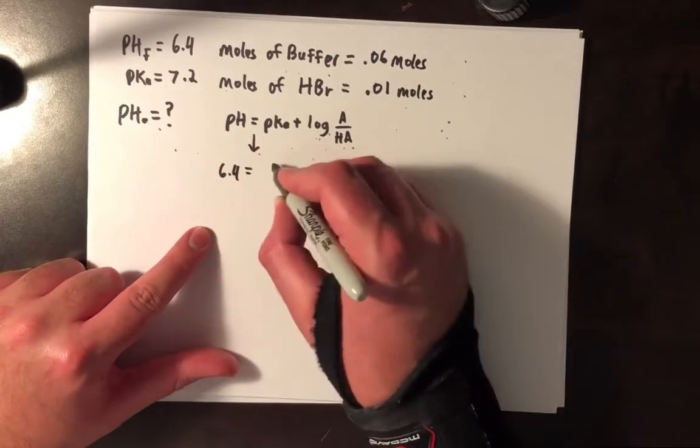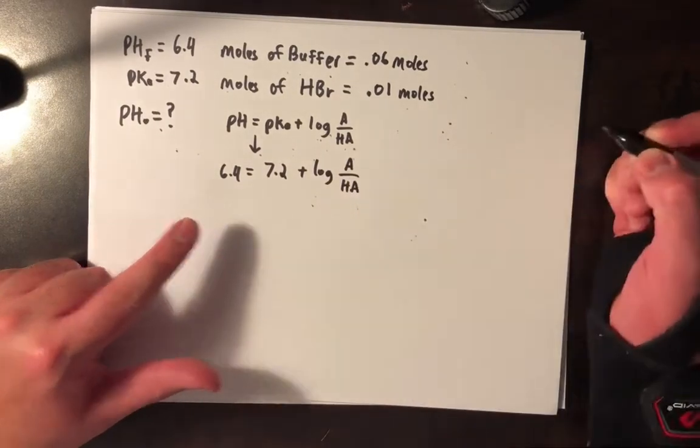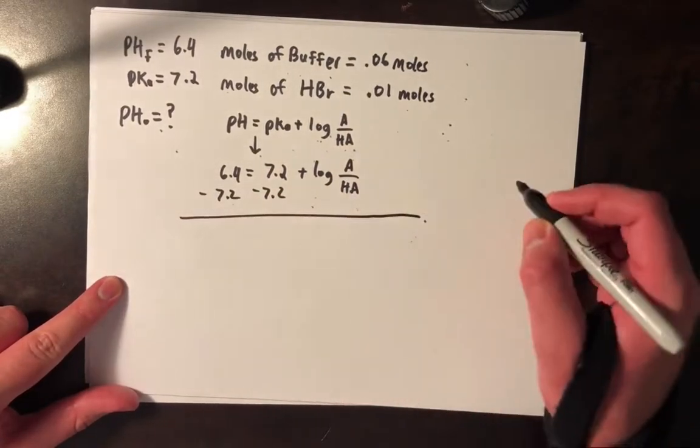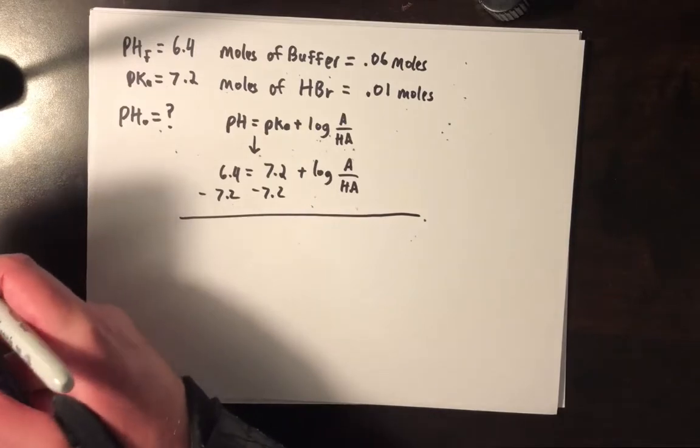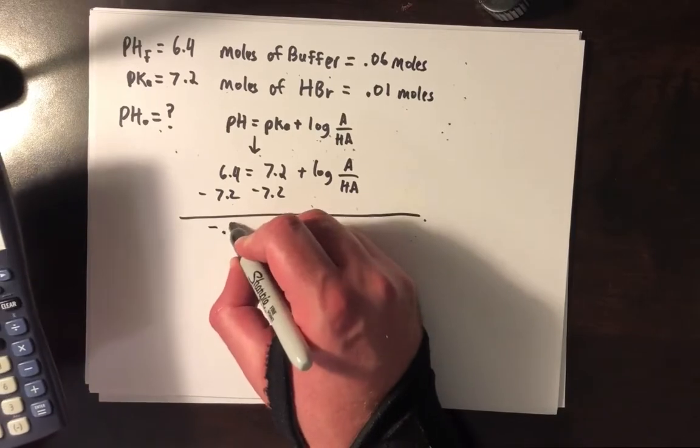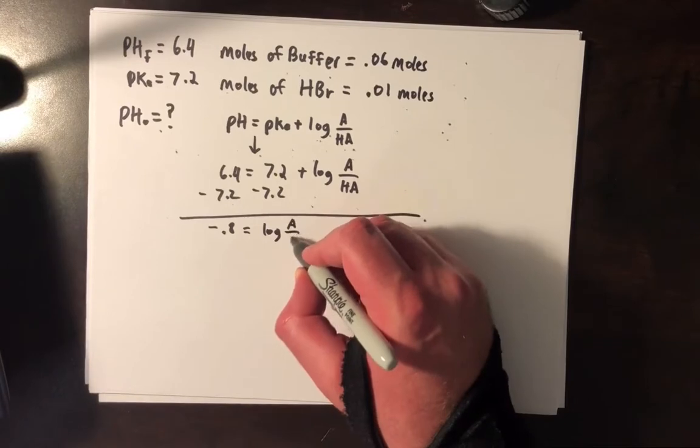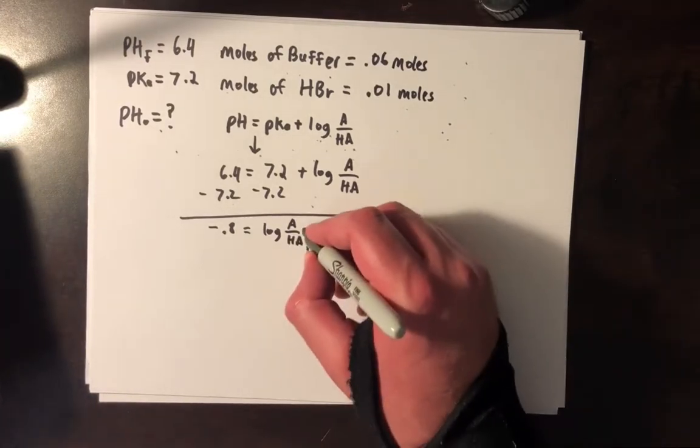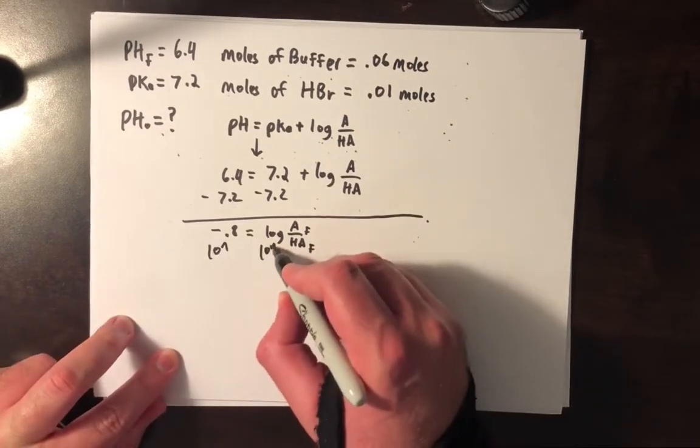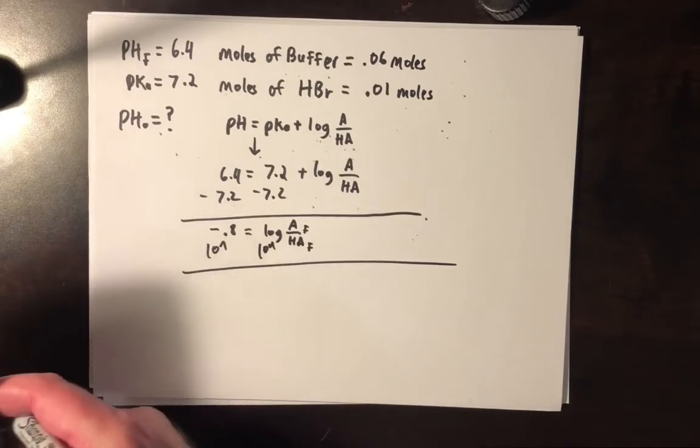6.4 equals pKa 7.2 plus the log of A⁻ to HA. Okay, subtract 7.2 from both sides, because we're chemists, we're great mathematicians. And I always got to use a calculator, especially if I'm making a video tutorial, because I want people to not just know that I'm an idiot, I want them just to think it. And I'm just going to say that these are F, like, final ratio of that. Okay, so do some more algebra, 10th power there. If I raise that to the negative 10th, so here's something you may want to take note of.